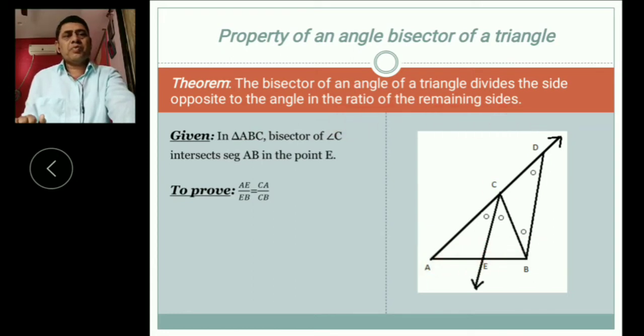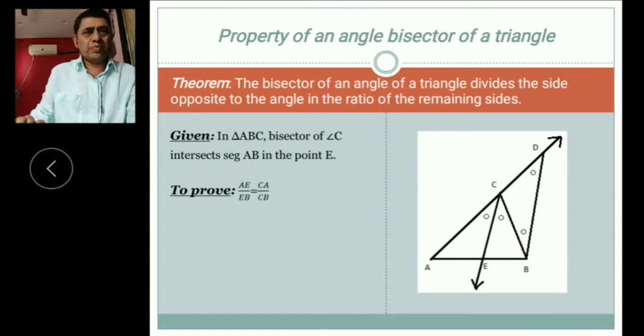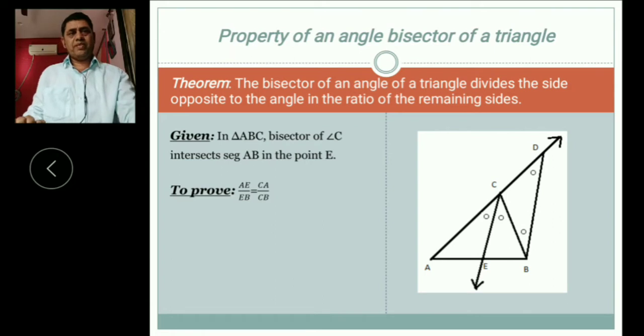Side opposite angle, that is this side is opposite angle ACB, in the ratio: AE by EB is equal to CA or AC by CB. This is our to prove.